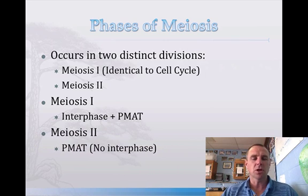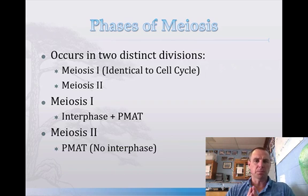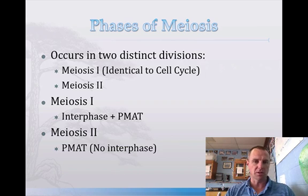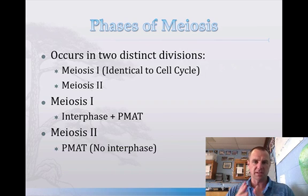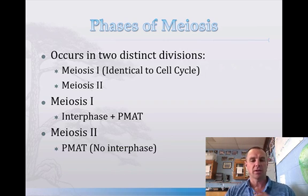In meiosis 2, you go through PMAT but you don't go through interphase. So you go through prophase — they coil up, the nucleus disappears, the spindles form. Metaphase — they line up down the middle. Anaphase — they separate. Telophase — they uncoil, the nucleus reappears, and they form two new cells.